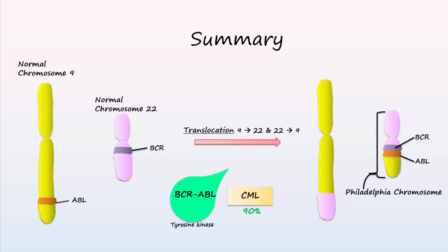In summary, the Philadelphia chromosome forms after a translocation between chromosomes 9 and 22. The BCR-ABL protein is a tyrosine kinase that transfers phosphate groups to cancer proteins, resulting in uncontrolled myeloid growth. This mutation is found in more than 90% of those with chronic myelogenous leukemia.